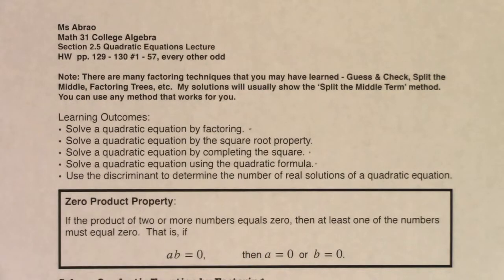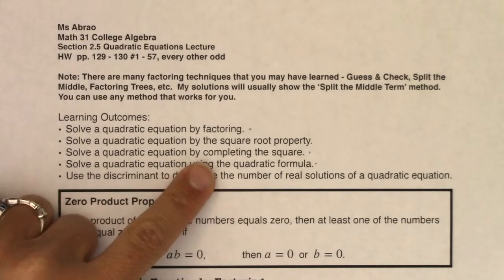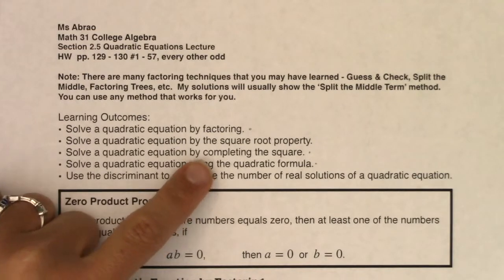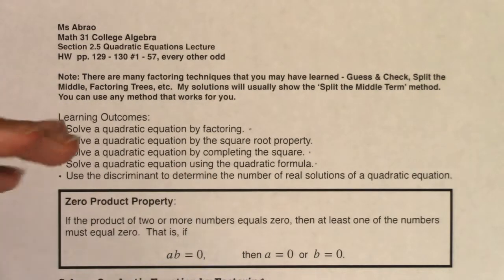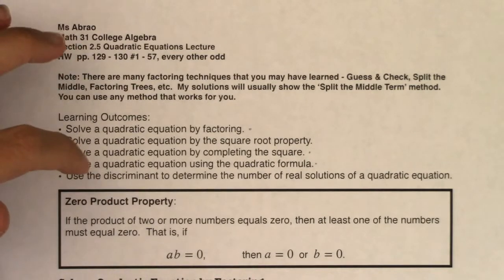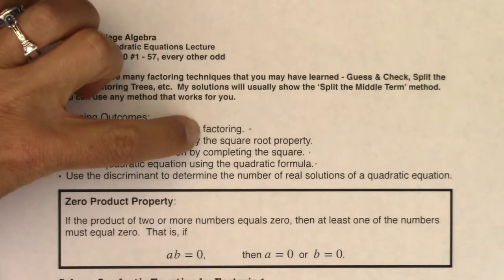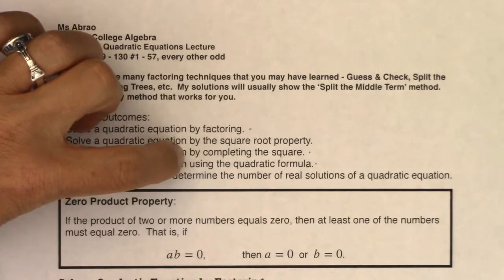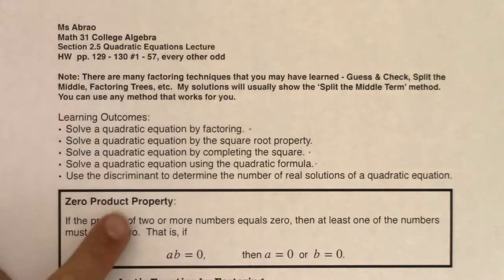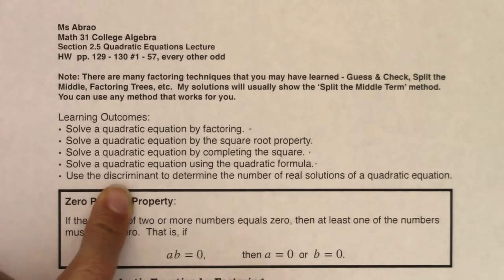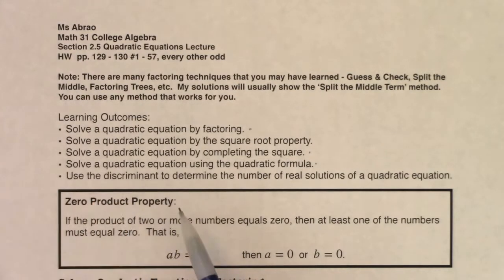For completing the square, I'm going to show you the technique because later on this semester we're going to use completing the square to find the equation of ellipses, circles, and things of that nature. But this technique won't show up till later — I just want to show it to you now. So we're going to solve by factoring, look at the square root property, complete the square, use the quadratic formula, and then talk about the discriminant. Maybe you've heard that term before, maybe you haven't — if so, great; if not, we're going to go over it.